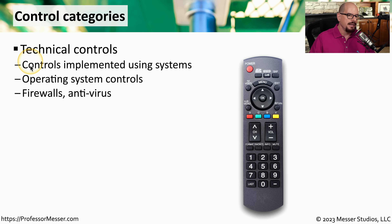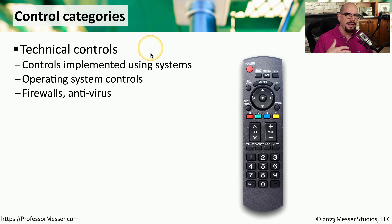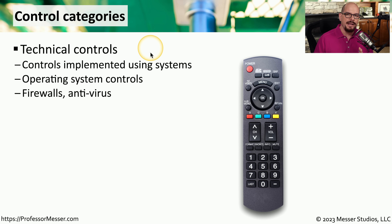The first category we'll look at are technical controls. These are controls that we implement using some type of technical system. If you're someone who is managing an operating system, you might set up policies and procedures within the operating system that would allow or disallow different functions from occurring. We can also put firewalls, antivirus, and other types of software into this category of technical controls.